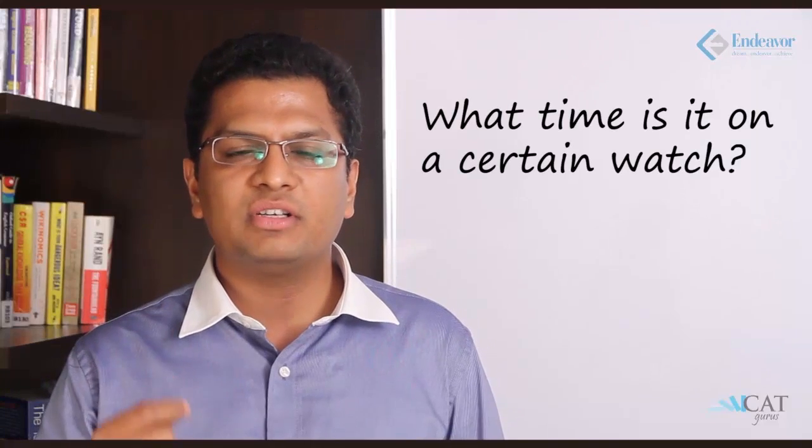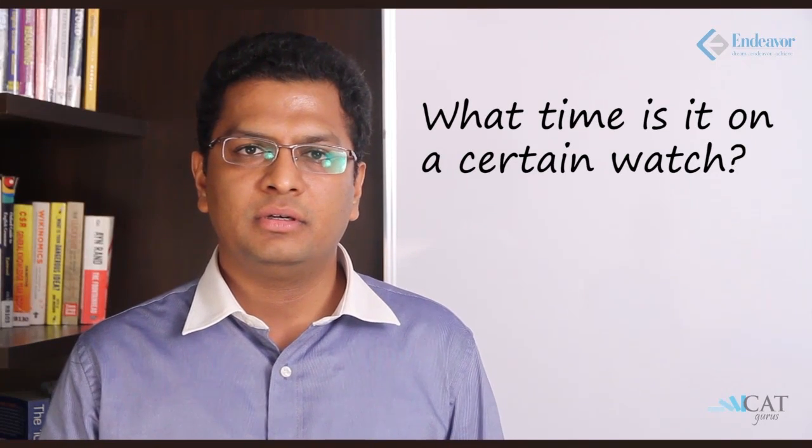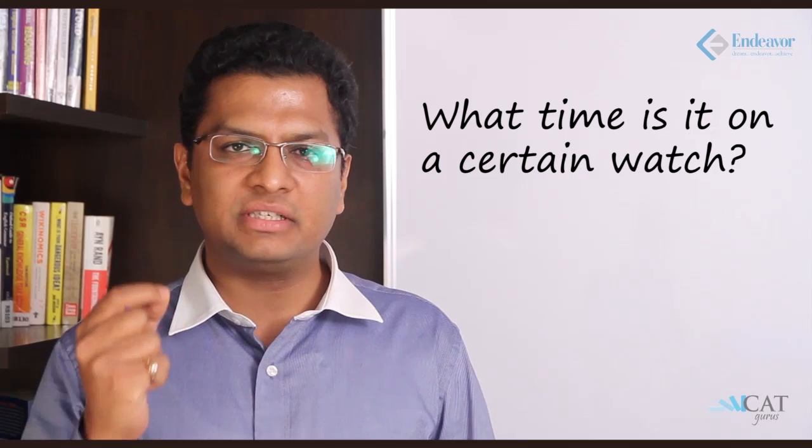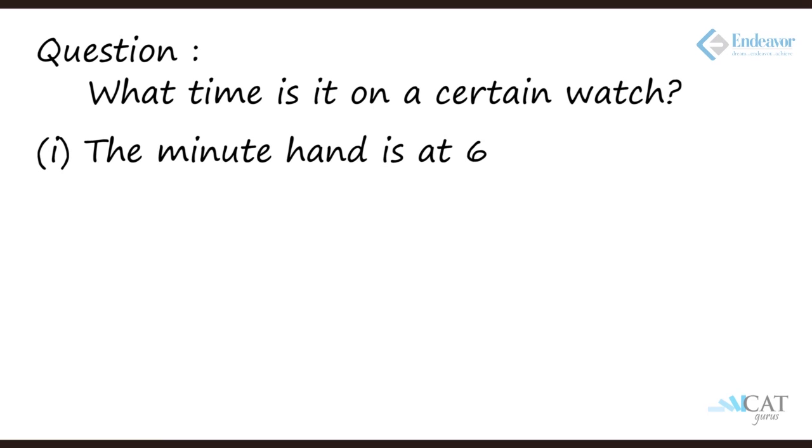What is the time on a certain watch? Simple straight question, what is the time on a watch? Let's have a look at the first statement: the minute hand is at 6. Now the minute hand is at 6 means it is 30 minutes past what? We don't know.